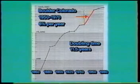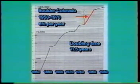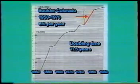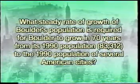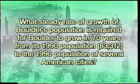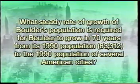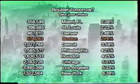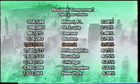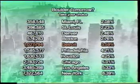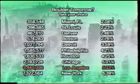Let's start with a semi-logarithmic graph of Boulder, Colorado's population. Census figures from 1950 to 1970 show a straight line indicating six percent per year growth. With big efforts we've reduced that rate, but let's ask: what growth rate would be needed for 70 years following 1990 so that Boulder's population in 2060 would equal a major American city? Boulder in 2060 could be as big as Boston at 2.75 percent per year, or Detroit at 3.6 percent. But the historic figure was six percent per year — continued one lifetime, Boulder would be larger than Los Angeles.